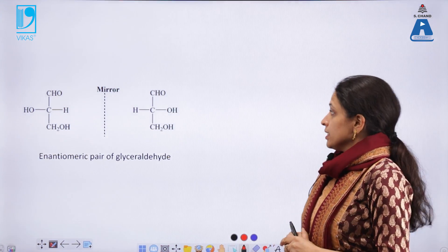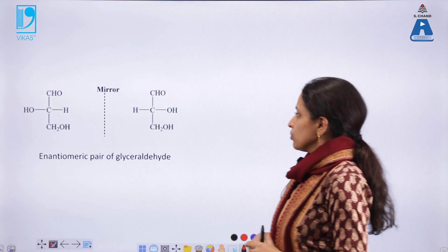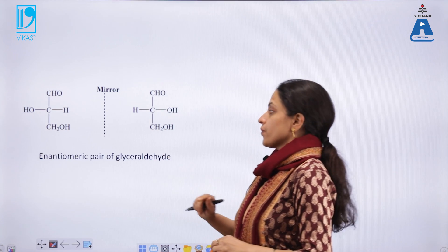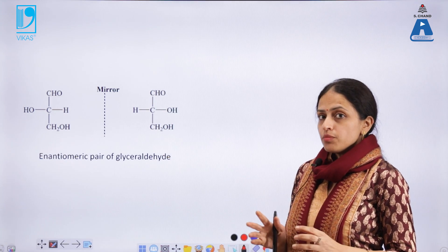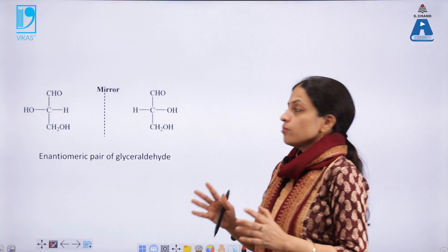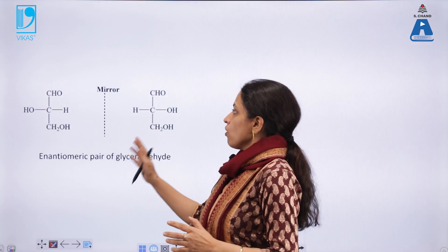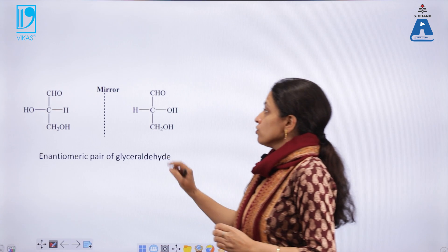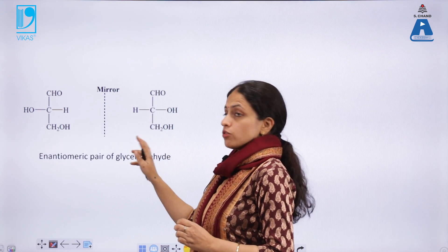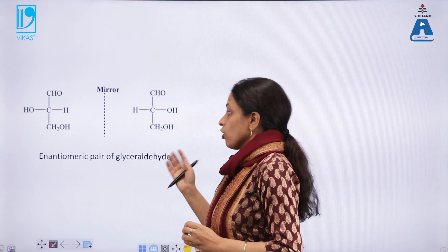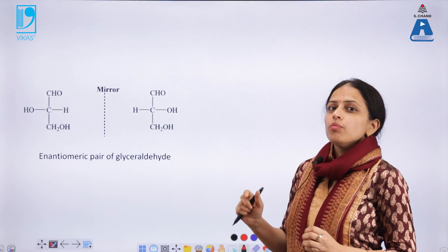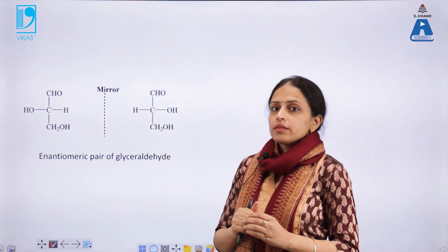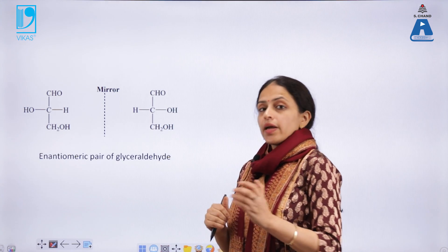On the screen you can see a pair of molecules. This pair of molecules are basically enantiomers of glyceraldehyde. Enantiomers are non-superimposable mirror images of a particular molecule which has a chiral center. These two forms of the molecule are non-superimposable and they will be optically active — that is, when passed through a polarimeter, they will rotate the plane of polarized light to either the right or left direction.